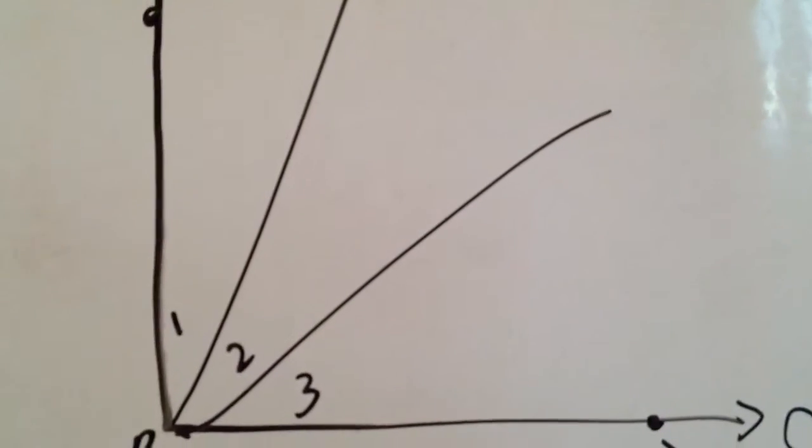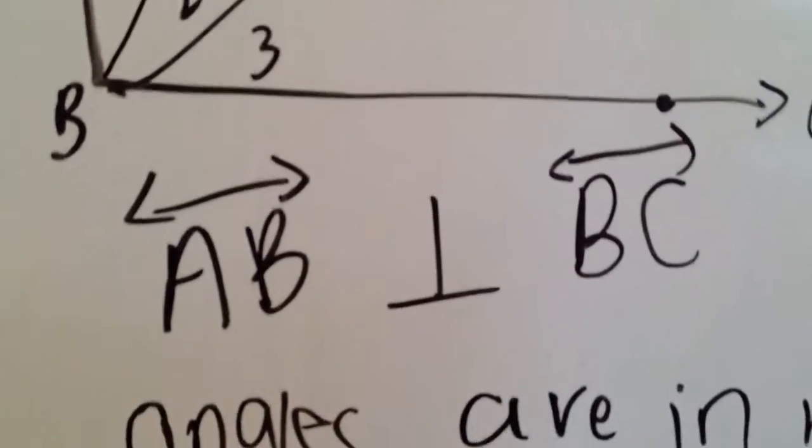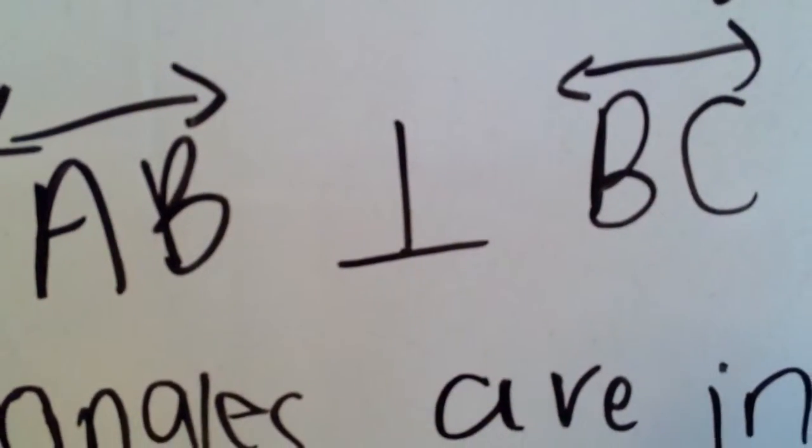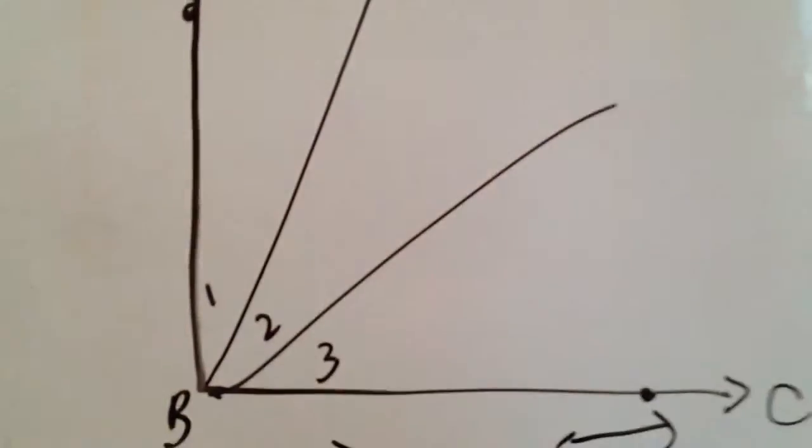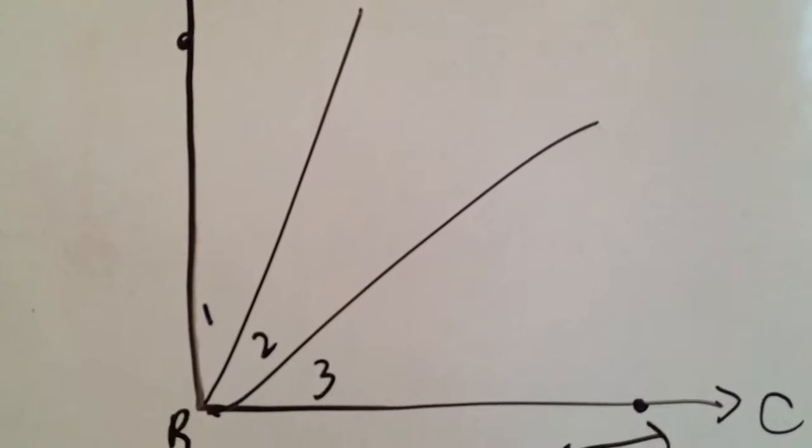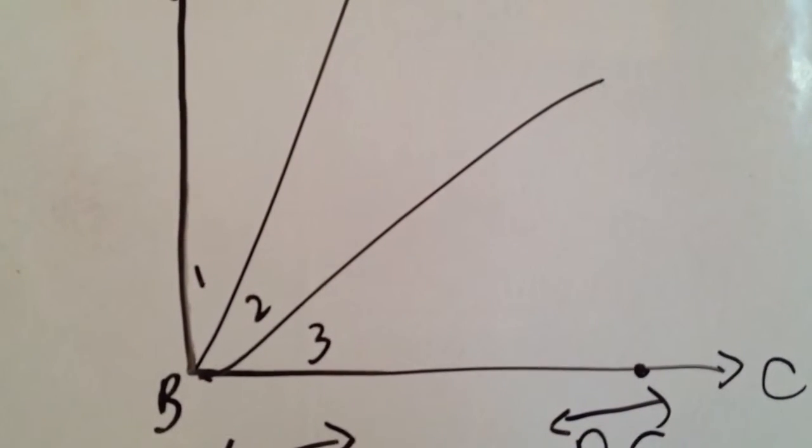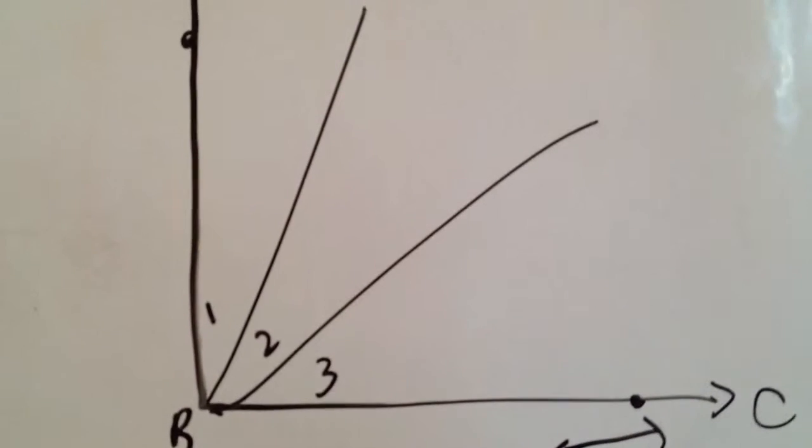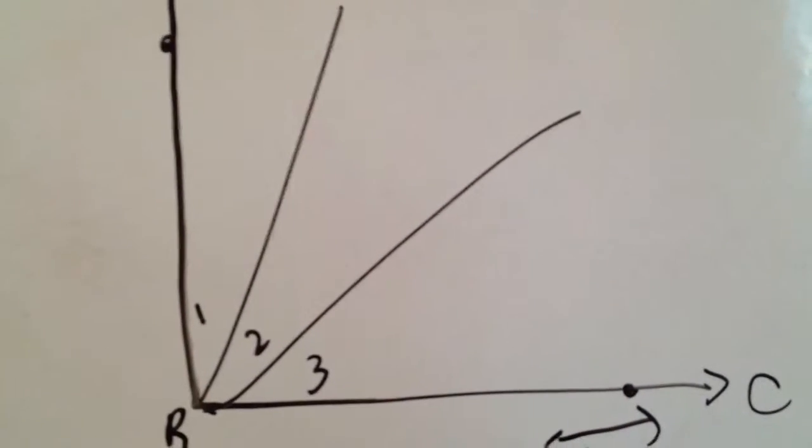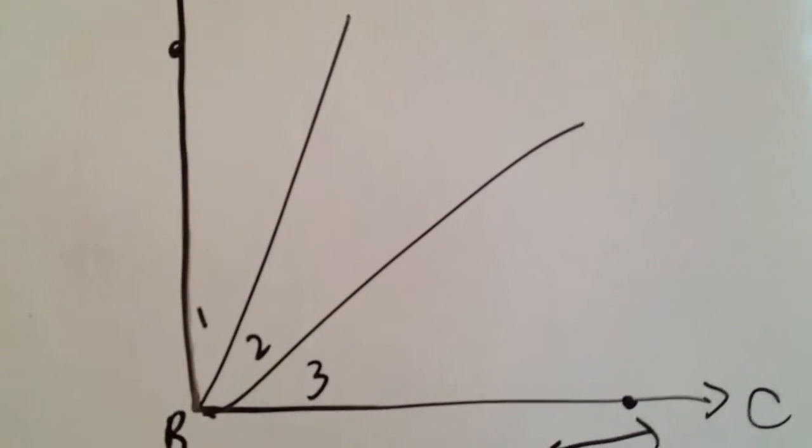It's basically a right angle, as we can see, because it says AB is perpendicular to BC. So this angle is the right angle, and it has divided the angle into three parts: 1, 2, and 3. They are not trisected because they are not divided into three equal parts. They are just divided into three parts.